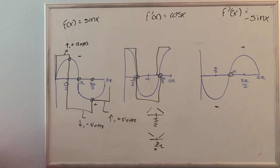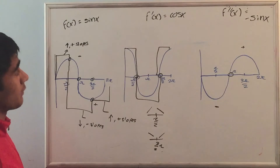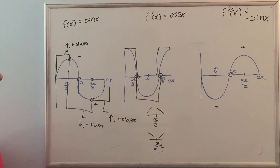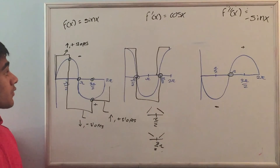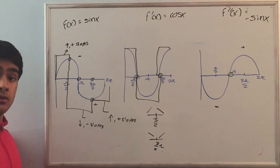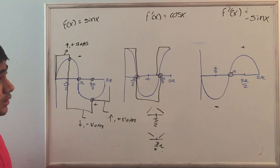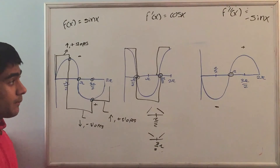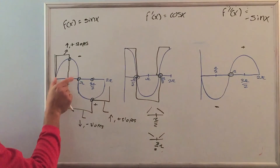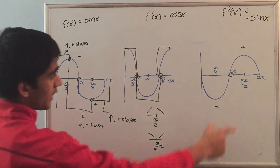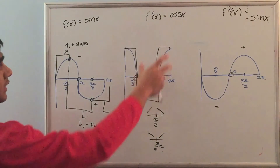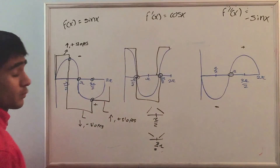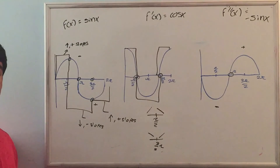At pi, the concavity changes. The relationship between f double prime and the original function f of x is that f double prime shows us the actual shape, or the concavity, of the original function. If over a region the second derivative gives us a negative value, the original function over that region will be concave down. If the second derivative gives us a positive value, the original function is concave up. Since it's negative from 0 to pi, it is concave down from 0 to pi — it's a dome. And since it's positive from pi to 2 pi, it is concave up from pi to 2 pi. Combining what we know from the first and second derivatives, we can actually sketch f of x — that is called curve sketching.